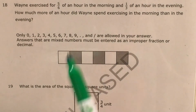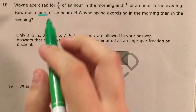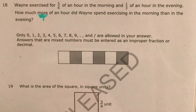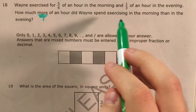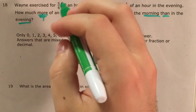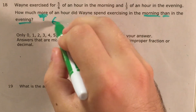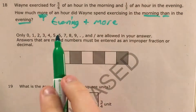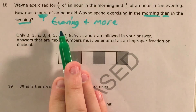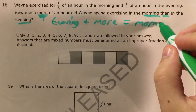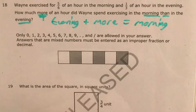So to start with, I'm going to underline the word 'more,' because when I see the word more, that tells me I need to do some addition. And specifically, since it says how much more of an hour did Wayne spend exercising in the morning than in the evening, I know how I'm going to write my addition sentence: however much time he spent exercising in the evening, plus however much more time we're trying to find, equals how much time he spent exercising in the morning.